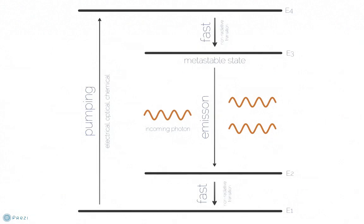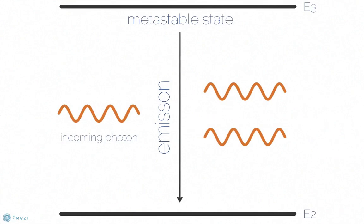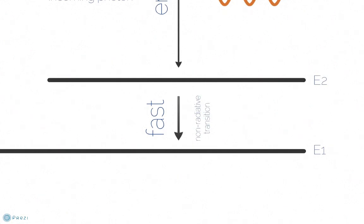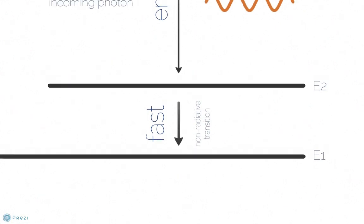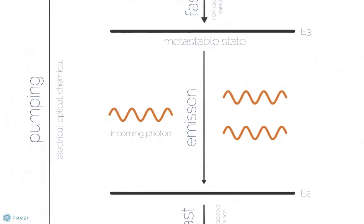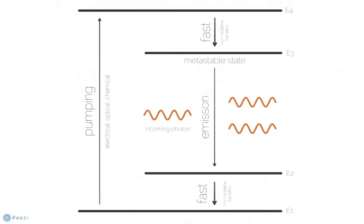With a four energy level system, the population inversion is between levels E3 and E2. This system has a fast non-radiative transition between E2 and the lower energy level E1 that allows the population at E2 to be depleted rapidly. Therefore, N3 has become significantly larger than N2, increasing the amplification gain. This creates a population inversion requiring minimal energy from the pumping process, making this more efficient than the three energy level system.